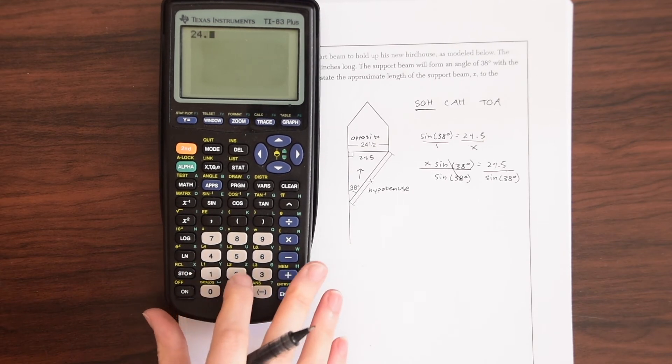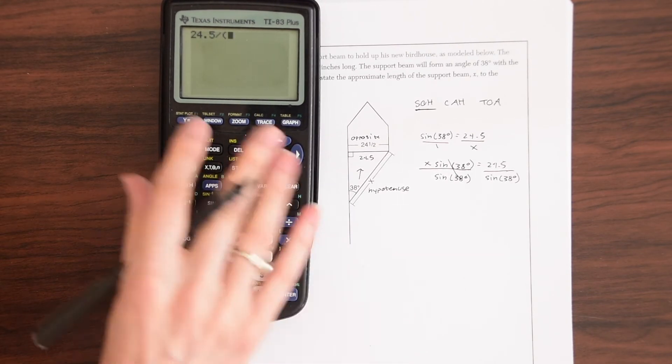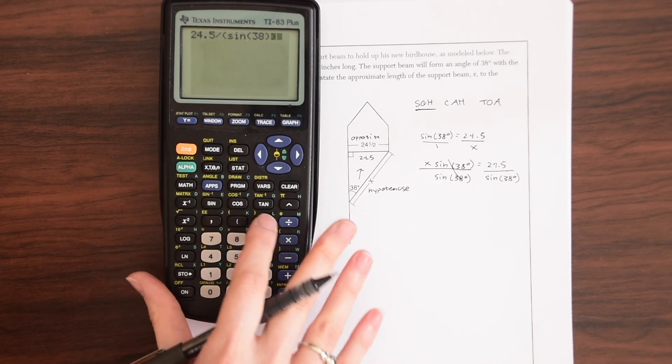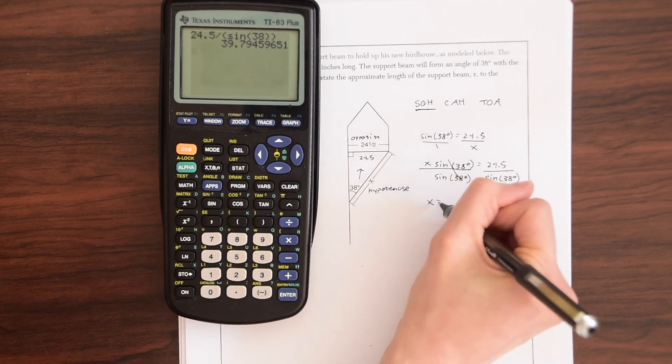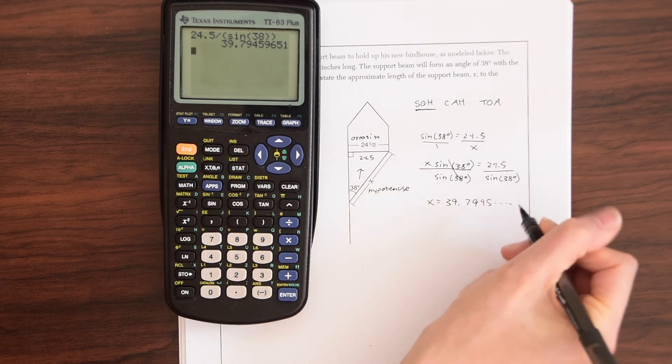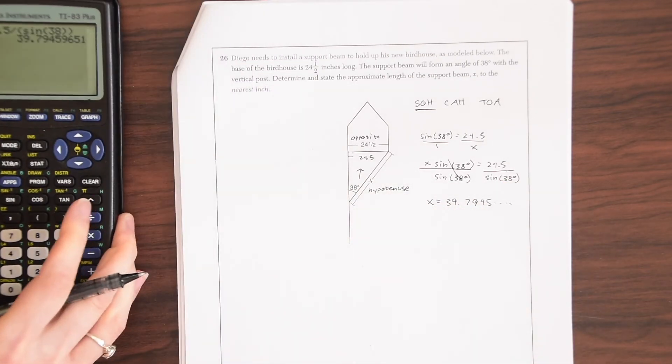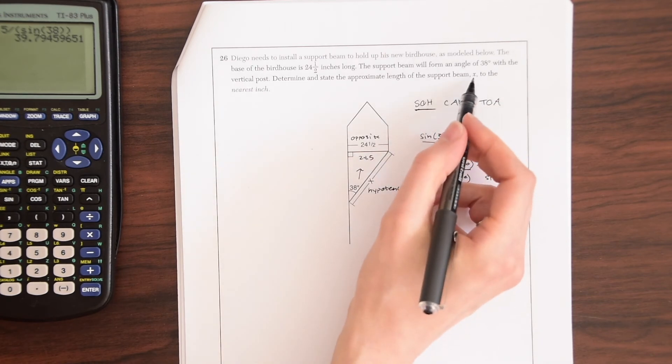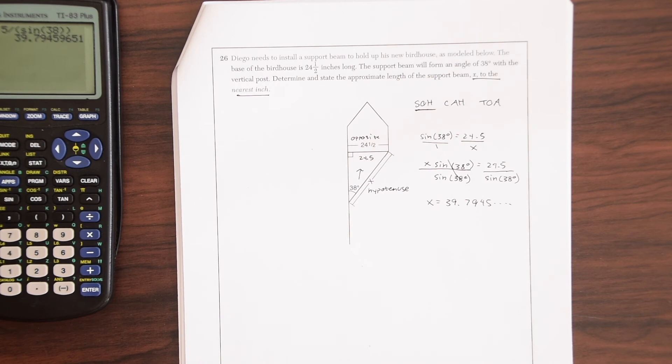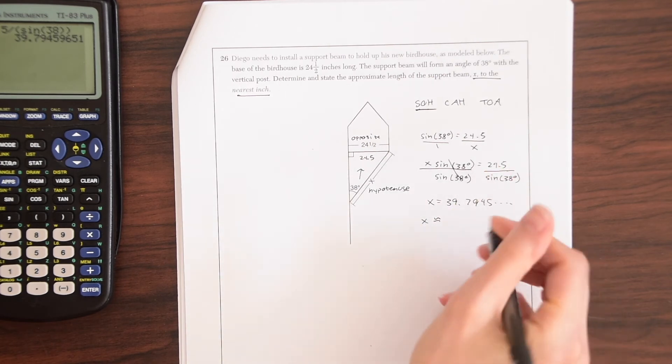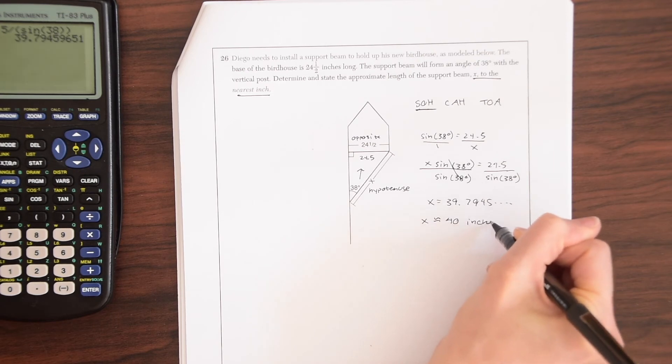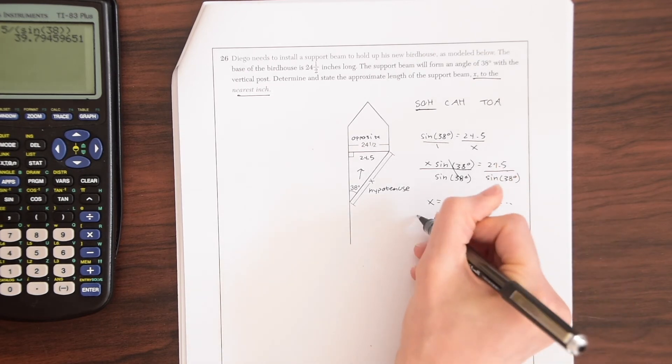And now let's calculate this. So 24.5 divided by, so I just put a parentheses here, sine of 38 degrees. And then we get x is equal to 39.7945 and it keeps going. And when we look back at our question, it says they want x to the nearest inch. So the nearest whole inch. So x is going to be about 40 inches. And that's our answer.